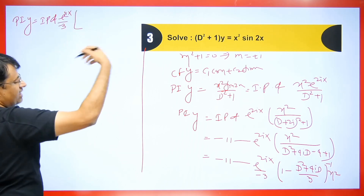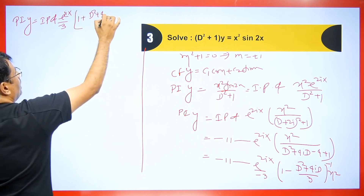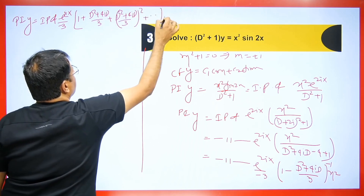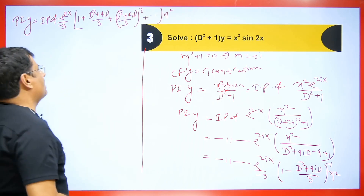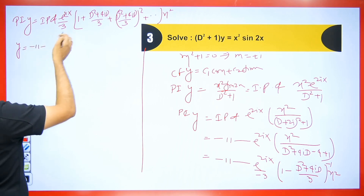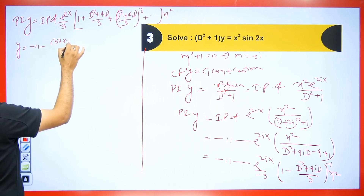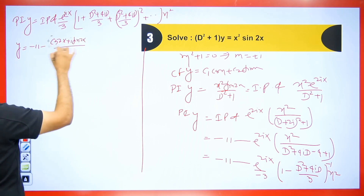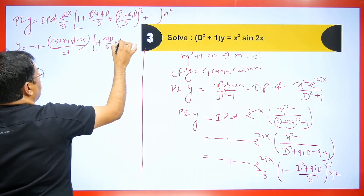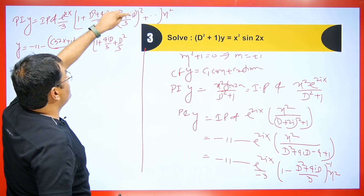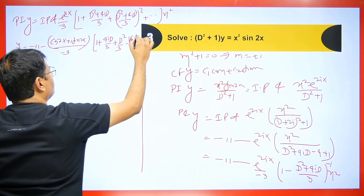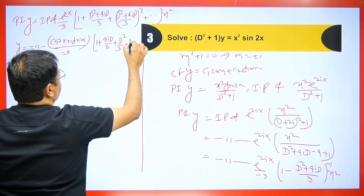So y = Imaginary Part of [e^(2ix) / (−3)] · [1 + (4i·D)/3 + (D²/3) + (4i)²D²/9] · x², where (4i)²/9 = −16/9. Combining D² terms: D²/3 − 16D²/9 = 3D²/9 − 16D²/9 = −13D²/9. So the expansion is [1 + (4i·D)/3 − (13D²/9)] · x².